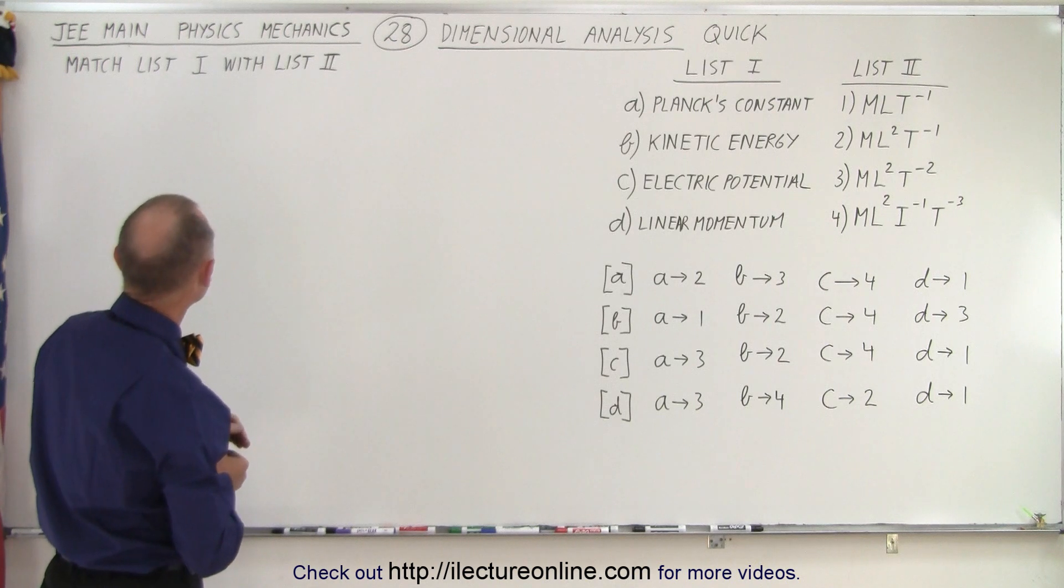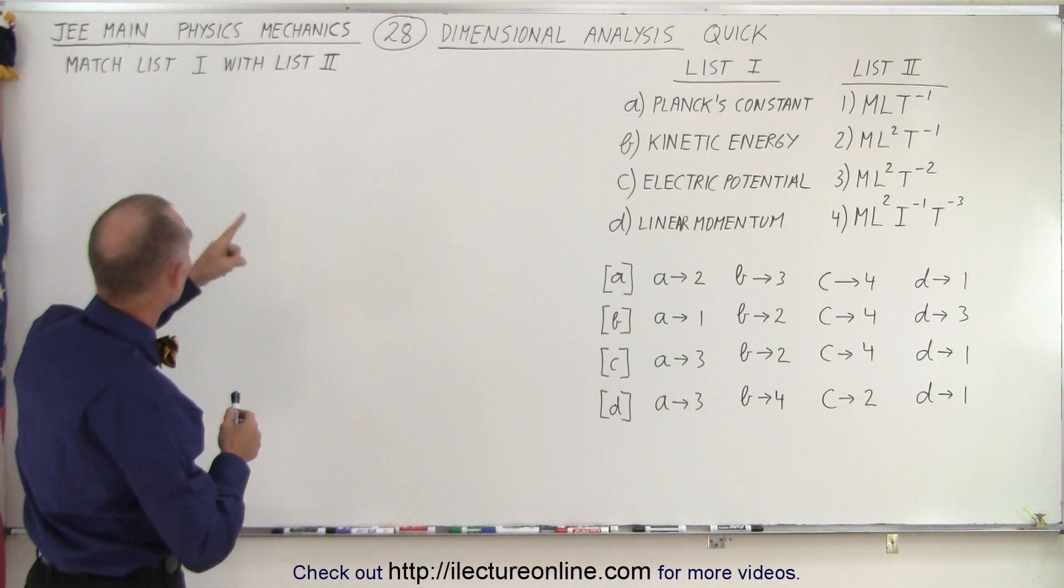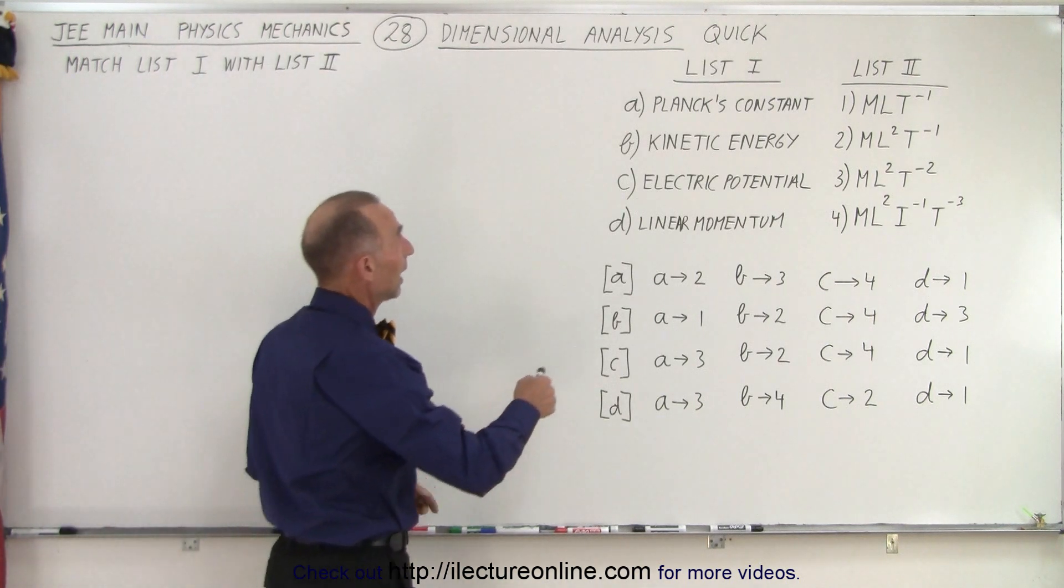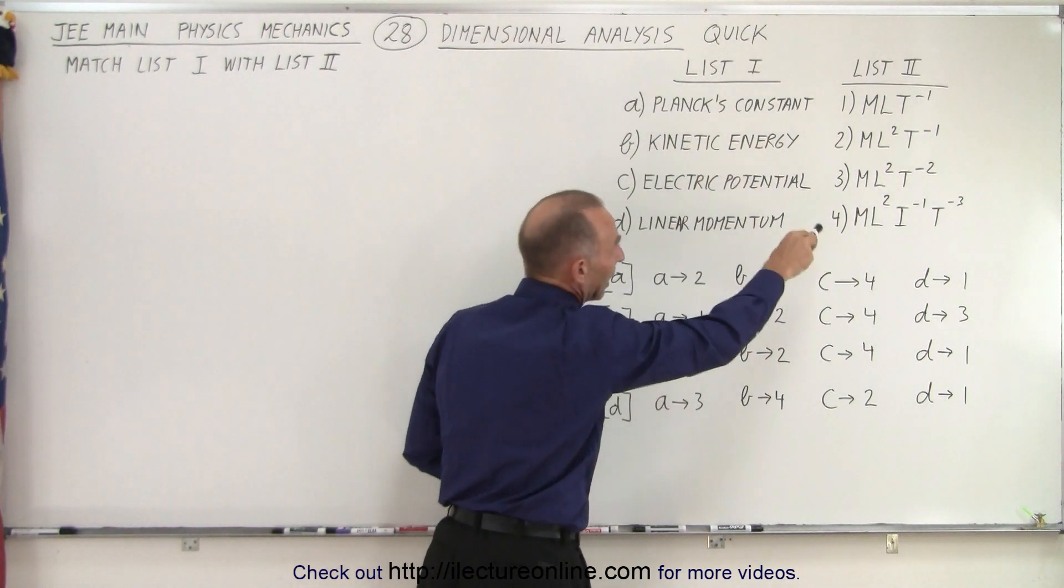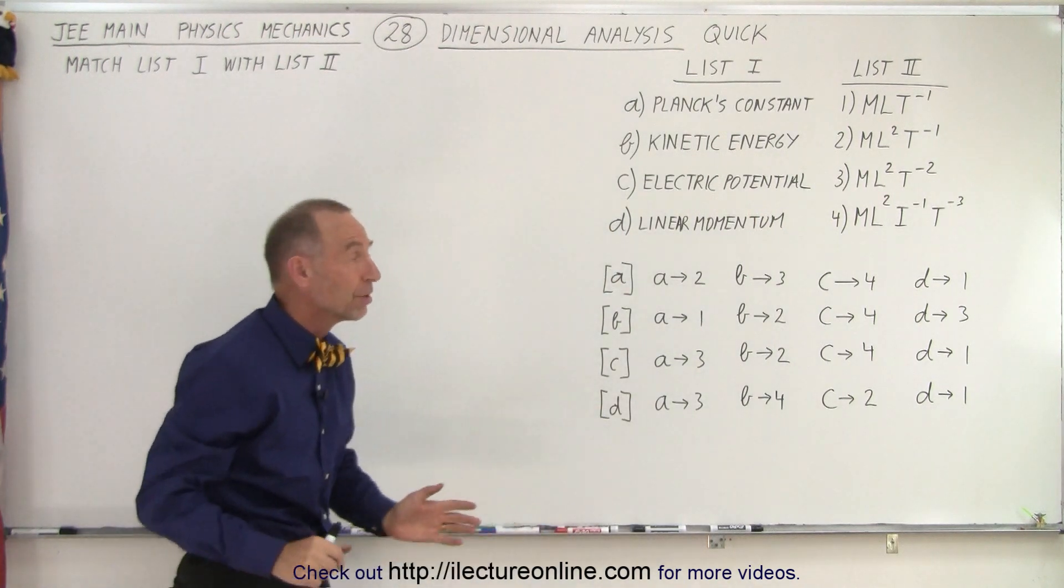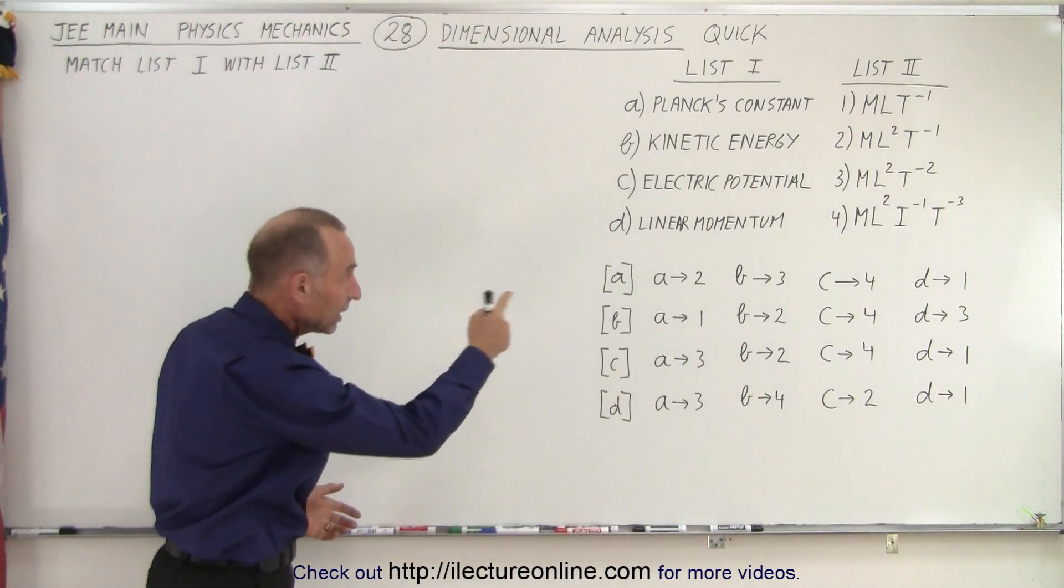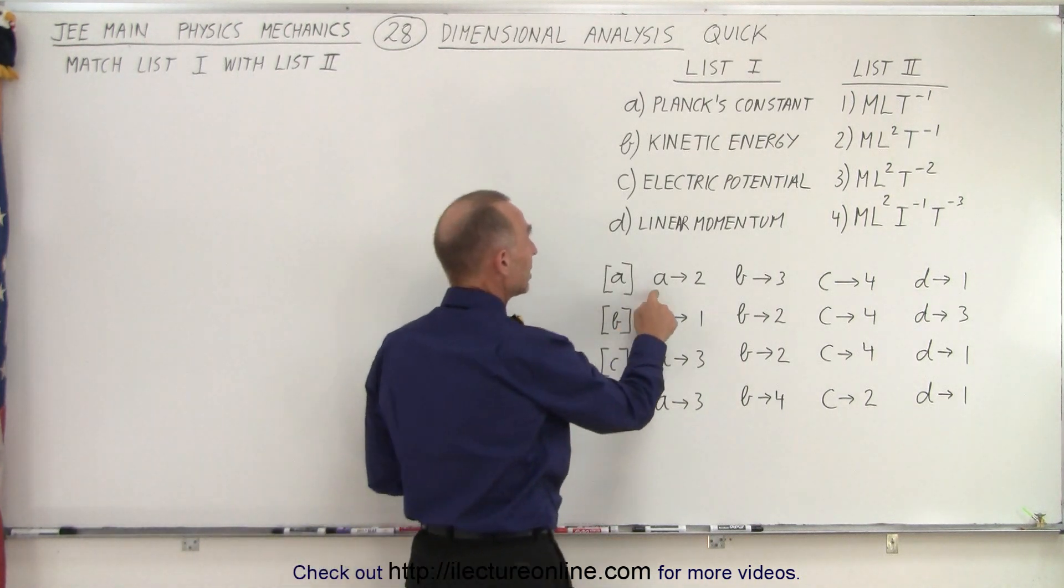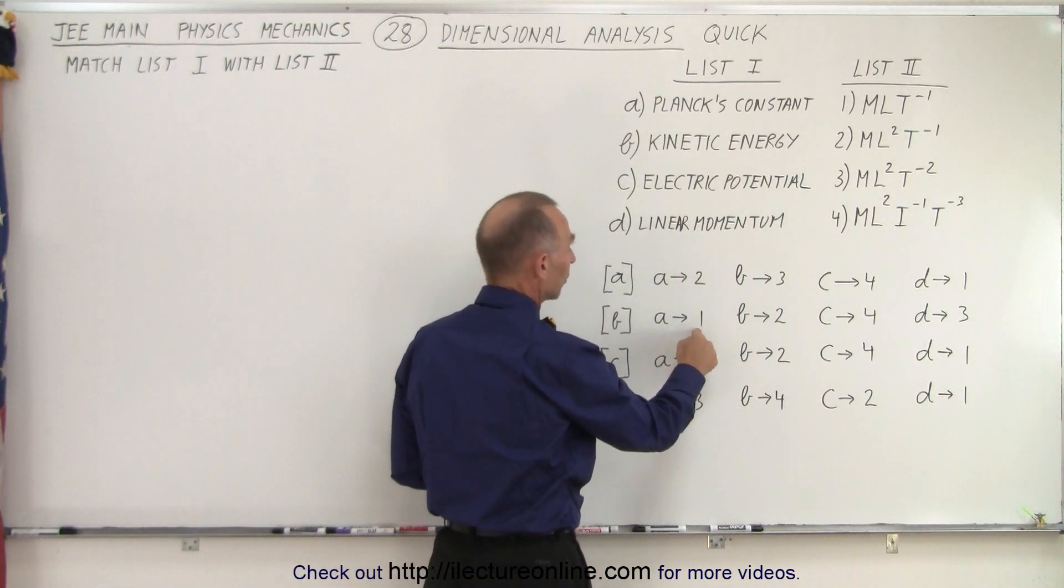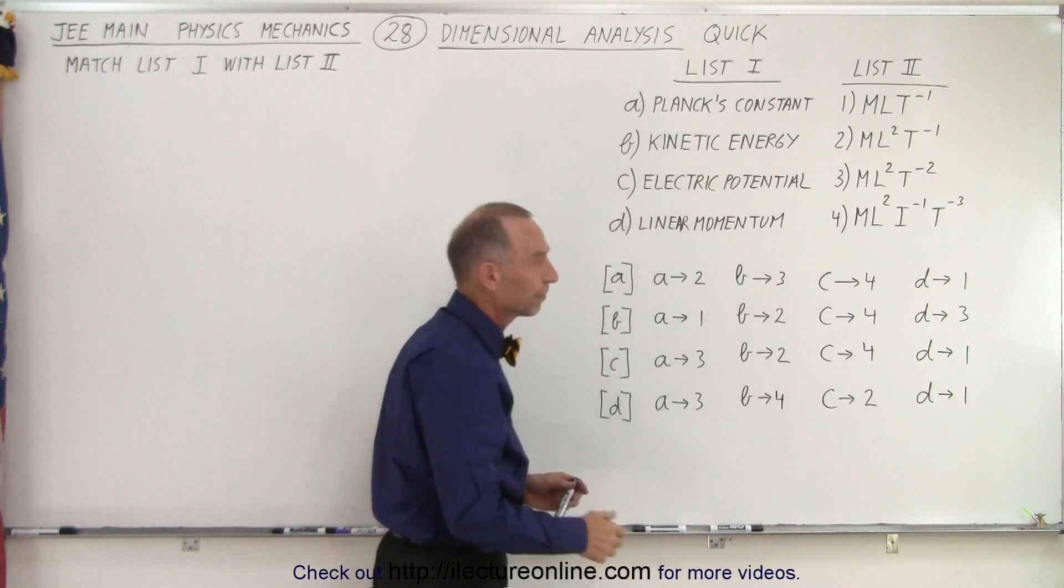So first of all, they're telling us to match list 1 with list 2. List 1 has Planck's constant, kinetic energy, electrical potential, linear momentum. And list 2 has four combinations of dimensions. And then one of these should be the correct answer where we have A either belongs to 2, A belongs to 1, A belongs to 3, and then so forth for all the other ones.